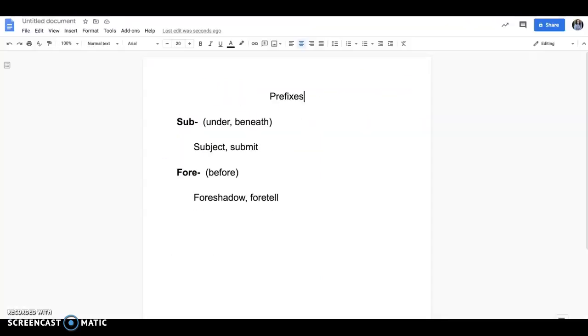Now just to review, we have some prefixes that we have talked about previously. Sub, remember that means under or beneath, and some examples of that would be subject, submit. One of our critical vocabulary words was subdue. And we also have the word for, which means before, like foreshadow or foretell. Those things are foreshadow, something is coming, foretell, like you can foretell the future, tell it before it happens.